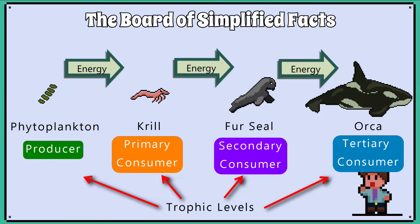For example, each stage can be described as a trophic level. And instead of a first, second, and third stage consumer, we use the terms primary consumer, secondary consumer, tertiary consumer, and even a quaternary consumer.